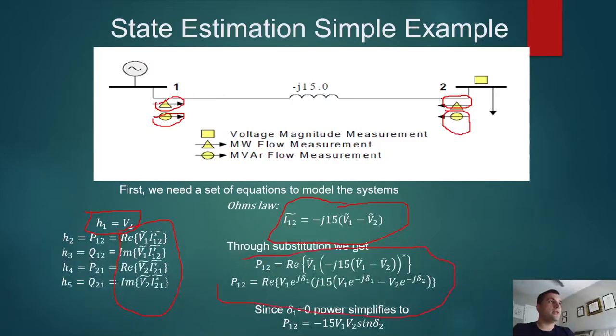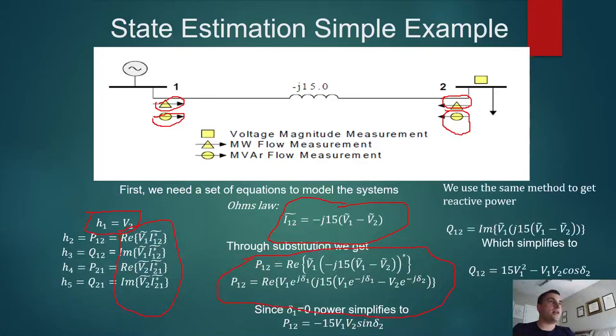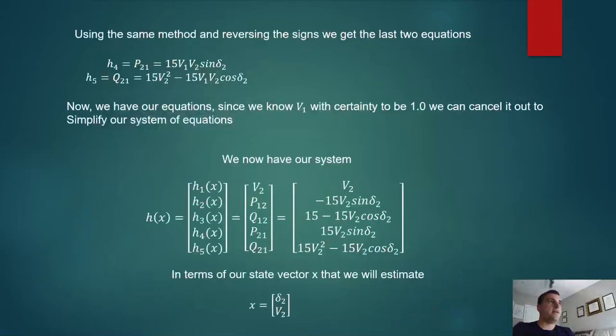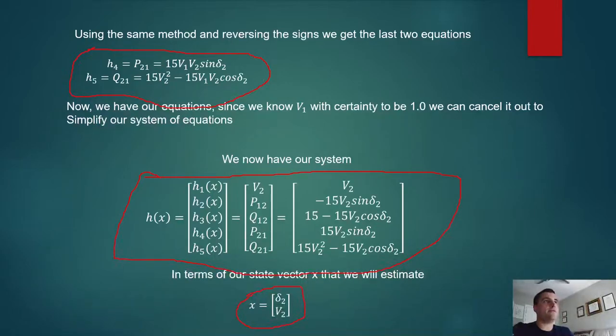And then we can do the same thing to get real and imaginary power on bus 2. Now that we have our equations, and we know v1 for a certainty, we can cancel it out and that makes our equations form into this nice H matrix that looks like this. And now we have all of our equations, so we have now two unknowns in all our measurements in terms of that, which are delta 2, which is the phasor offset between voltage 1 and voltage 2. Since delta is just an offset, we can just arbitrarily call one of them 0, which again makes our math easier, so we only have two state variables that we need to know as opposed to three.